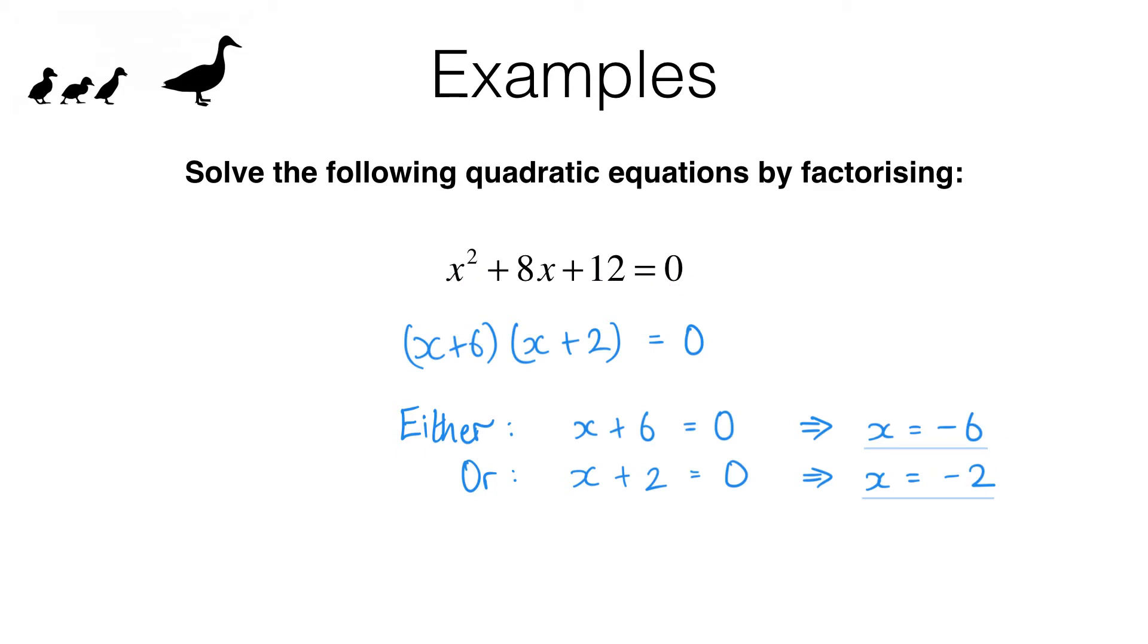Remember, we can always check our solutions by substituting them into the original equation and checking that the equation is satisfied. For example, if x equals negative 6, then x squared here is negative 6 times negative 6, which is positive 36.